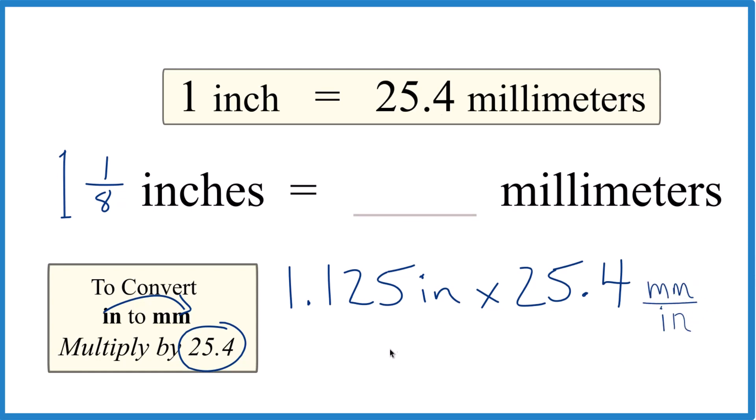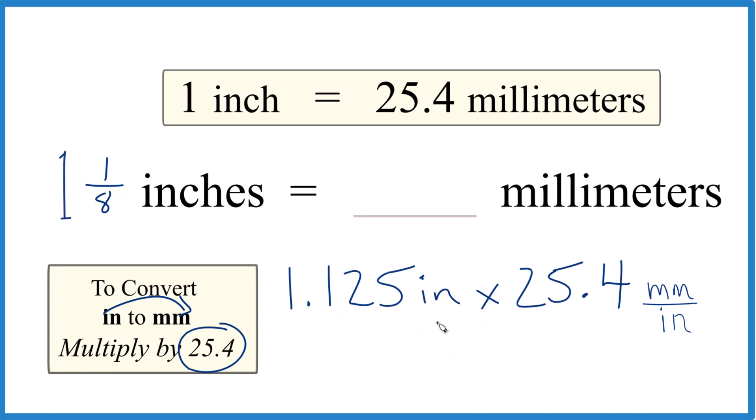So 1.125 times 25.4, that equals 28.575, I'm going to call it 28.6. And because we have inches up top and on the bottom, they cancel out, left with millimeters.